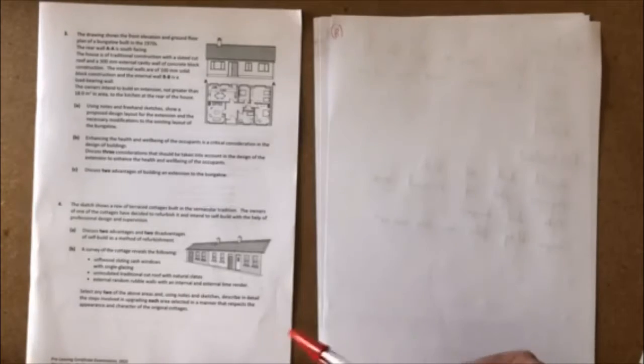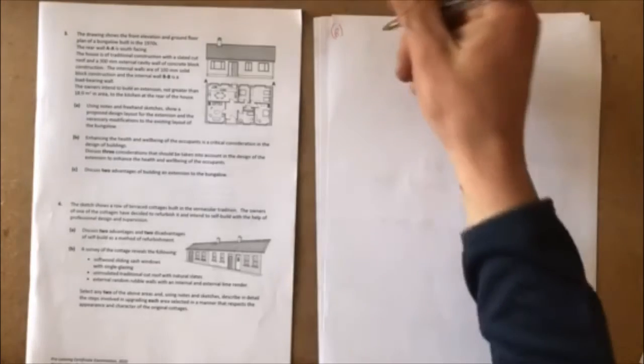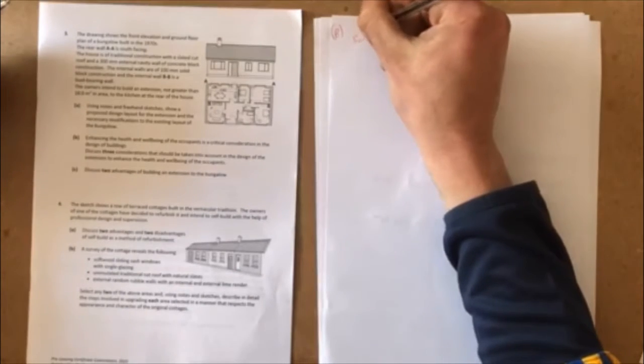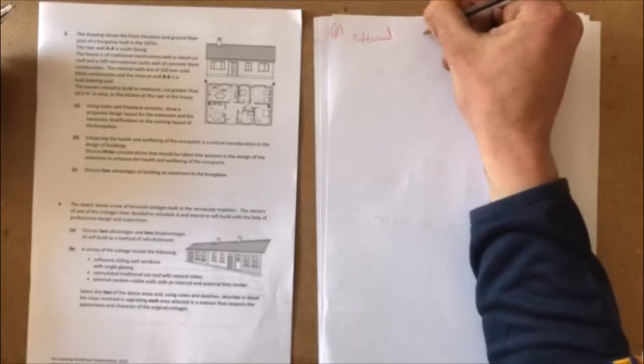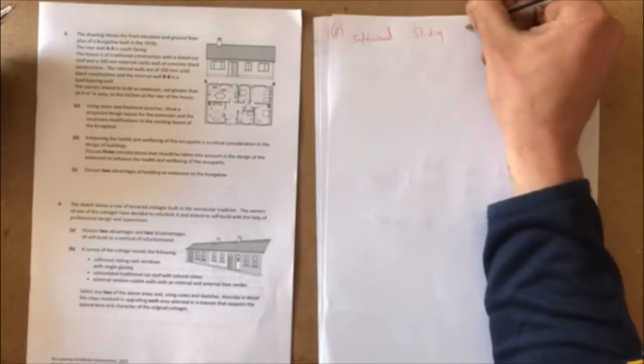Select any two areas of the above and using notes and sketches describe in detail the steps involved in upgrading each of the selected areas in a manner that respects the appearance and character of the original cottage. One big thing with renovating these is we need to retain everything, we need to try and keep it looking the exact same.